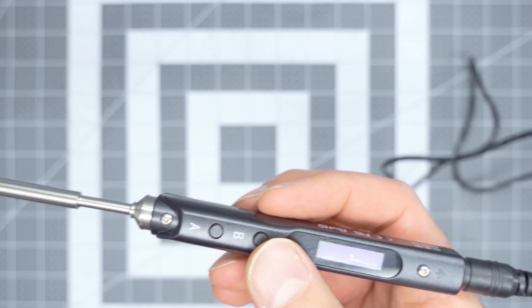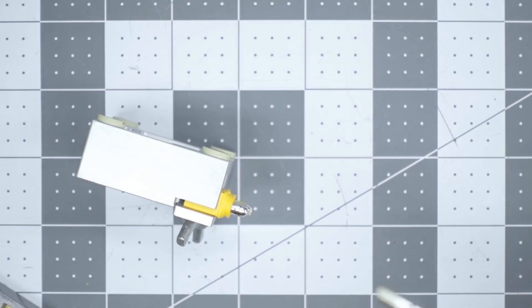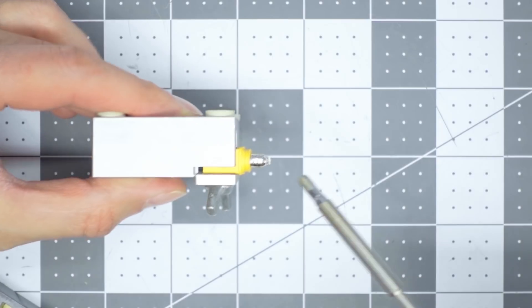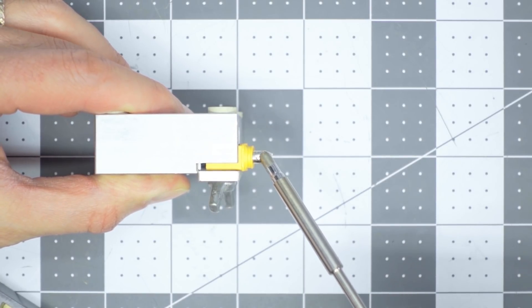And just to show you a little demo of how easy it is and how quick it is to solder with this little mini soldering iron. I'm heating up the end of an XT-60 connector here, removing some old wire that I chopped off. And we're going to remove the other one here just as quickly.